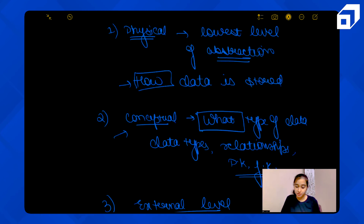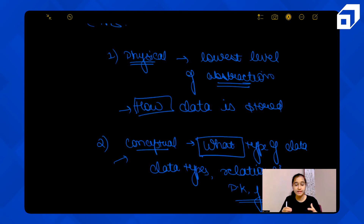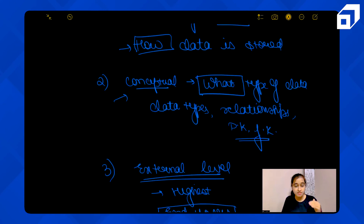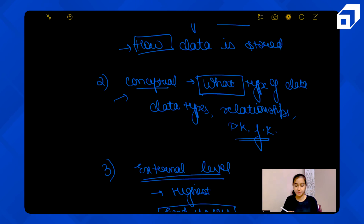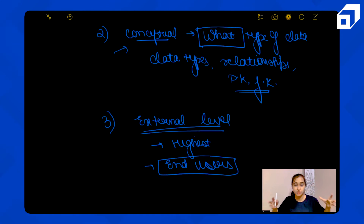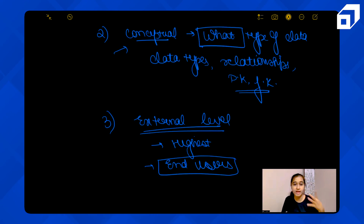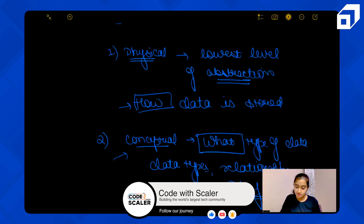To recap: the physical level is the lowest level, describing how data is stored using different data structures. The conceptual level describes what type of data is stored, the relationships between data, the constraints, primary keys, foreign keys, and unique keys. The external level is the highest level — for end users viewing the database. They don't need to know how data is stored, what types are used, or how relationships are maintained; they only see the view of the database.